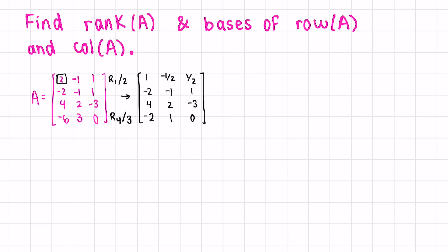Next, we want zeros under that leading one. We can do row 2 plus 2 row 1, row 3 minus 4 row 1, and row 4 plus 2 row 1. We can divide row 2 by negative 2.